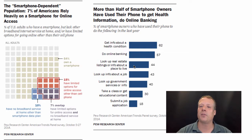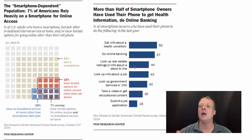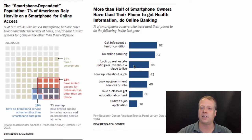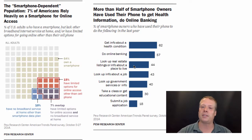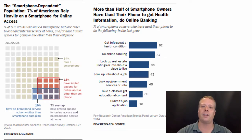More than half of smartphone owners have used their phone to do very personal things — get info about health conditions, do online banking, look up real estate, look up information on jobs. These are places that are becoming increasingly important to the individual consumer.